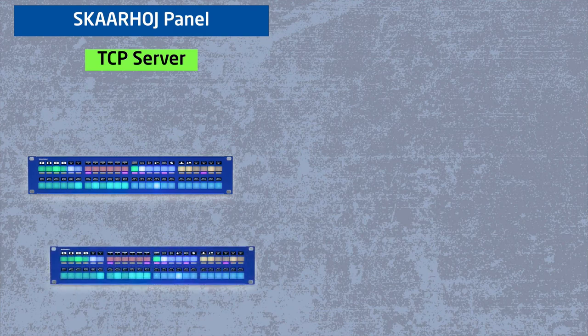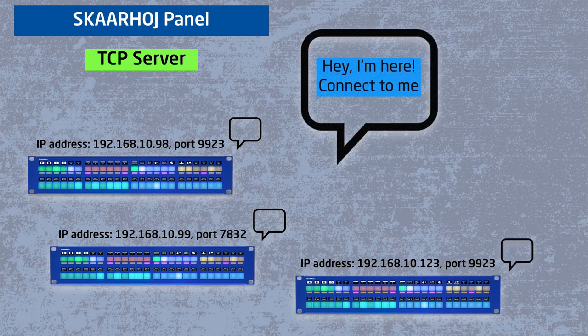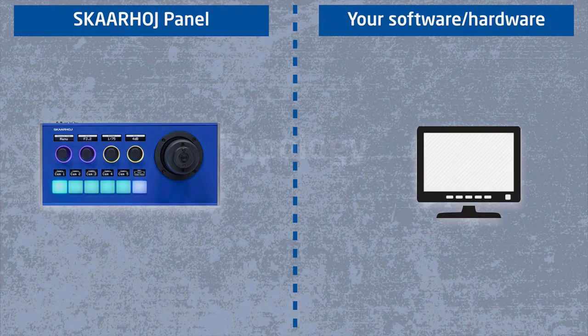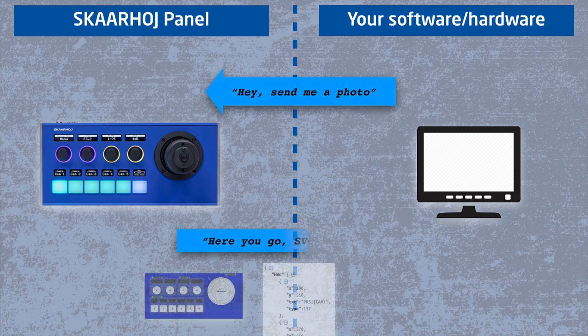Skyhoy panels can also be discovered — found on the network using standard discovery methods — so your application will quickly be able to see which panels are available. And not only will the panel tell you its IP address, it will also reveal its topology when you are connected. Basically, the panel will tell you how it looks and what features it has in terms of hardware components.